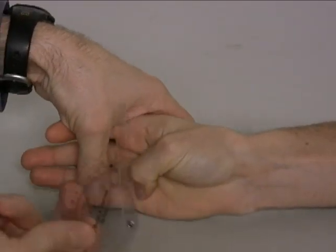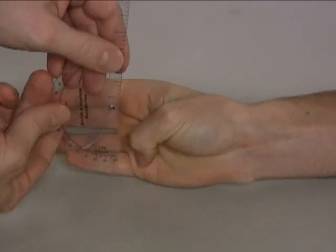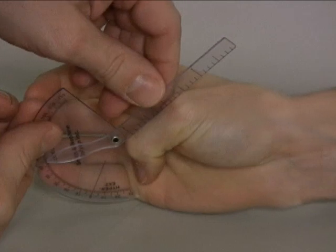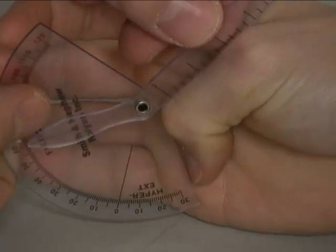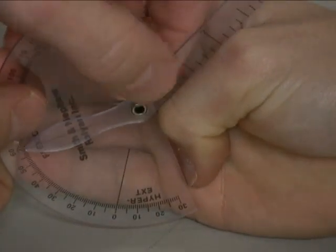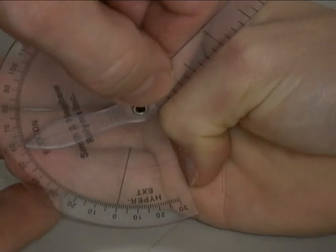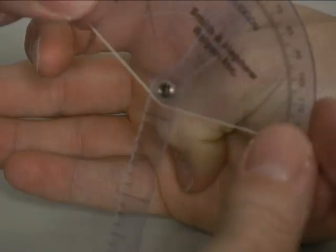The American Medical Association method for measuring thumb flexion is like this with the goniometer on edge and the moving arm extending all the way to the end of the nail. That's the key with the American Medical Association method. And using that method, we have about 60 degrees of flexion.